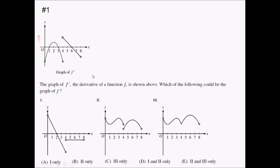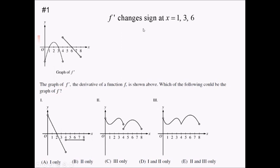So the first thing I'll look at is where f prime is crossing the x-axis, specifically changing sign. We know that f prime is changing sign at 1, 3, and 6. It also changes sign at 4, except that f prime is undefined there, so this is a little bit more ambiguous as to what it means for the original graph. But at 1, 3, and 6, definitely, because the derivative exists there and we're changing sign, we know that f is going to have extrema at those three x values.